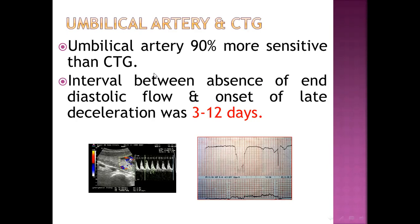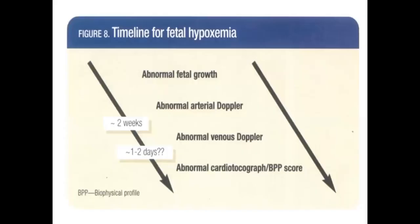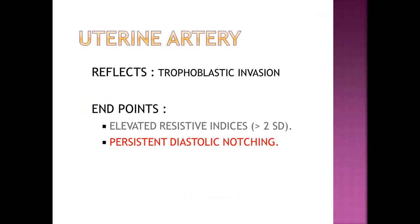Comparing umbilical artery Doppler with CTG: umbilical artery Doppler is 90% more sensitive than the non-stress test or CTG. The interval between absence of diastolic flow and onset of late decelerations was about 3 to 12 days. So fetal hypoxemia first affects fetal growth, then causes abnormal arterial Doppler, then abnormal venous Doppler, and lastly changes in non-stress test, cardiogram, or biophysical profile — which are late findings.